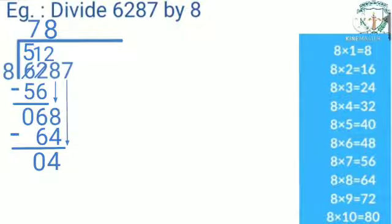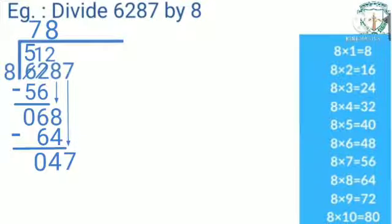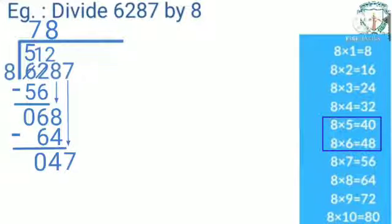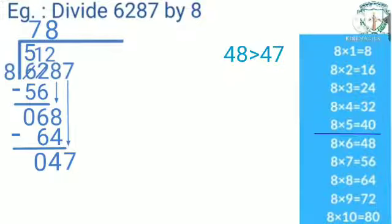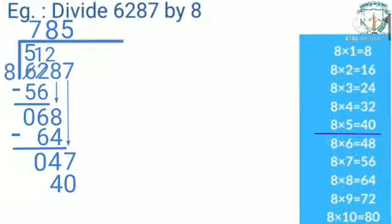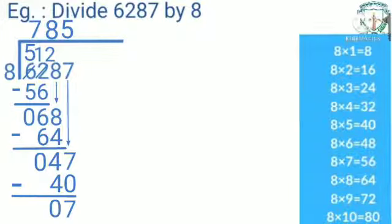Now bring down the digit 7, getting 47 as the new dividend. Let us divide 47 by 8. We have 40 and 48; since 48 is greater than 47, we take 40 — that is, 8 fives are 40. Write 5 in the quotient's place and write 40 below 47 and subtract. 7 minus 0 is 7; 4 minus 4 is 0. Therefore, the quotient is 785 and the remainder is 7.